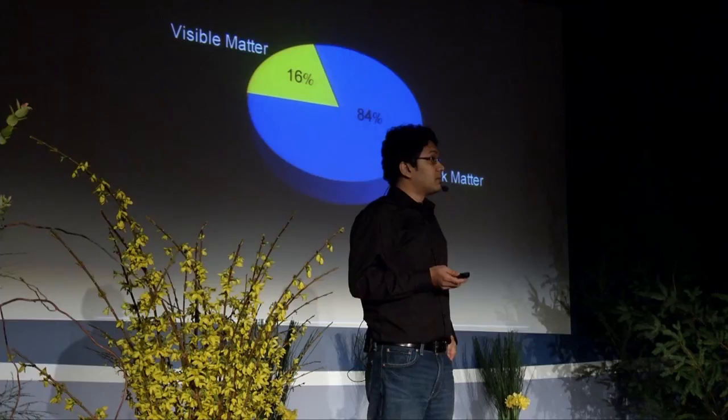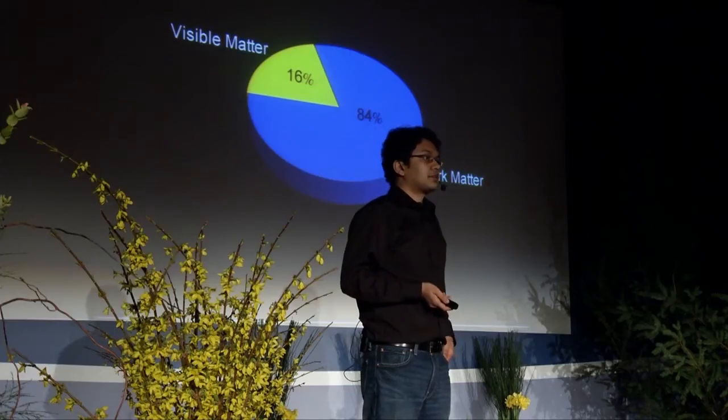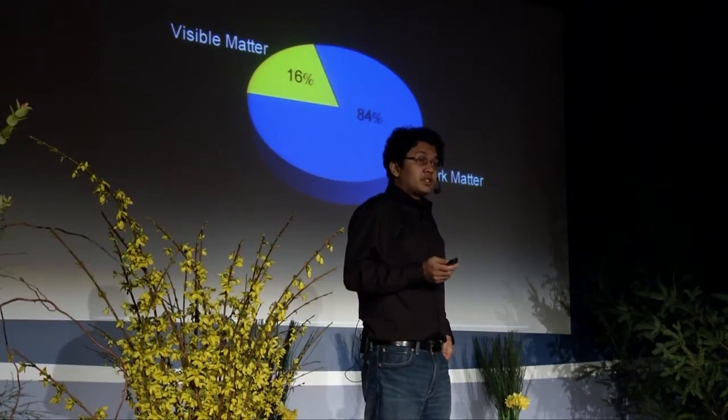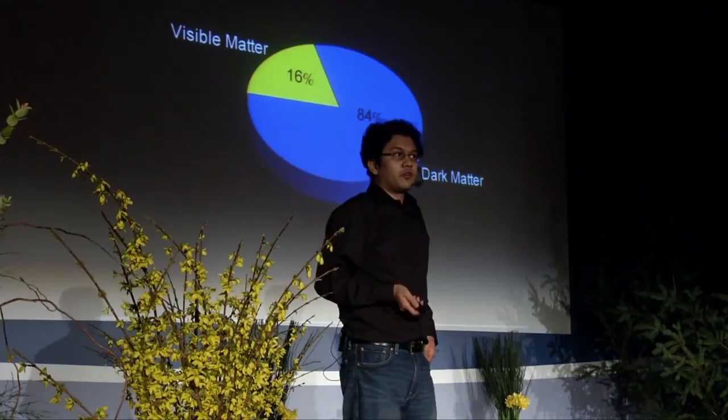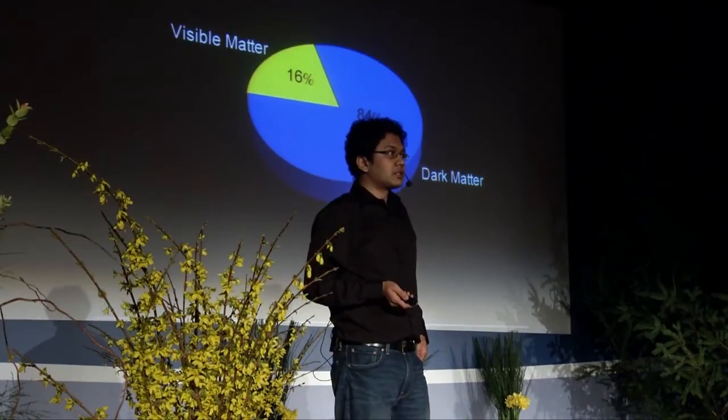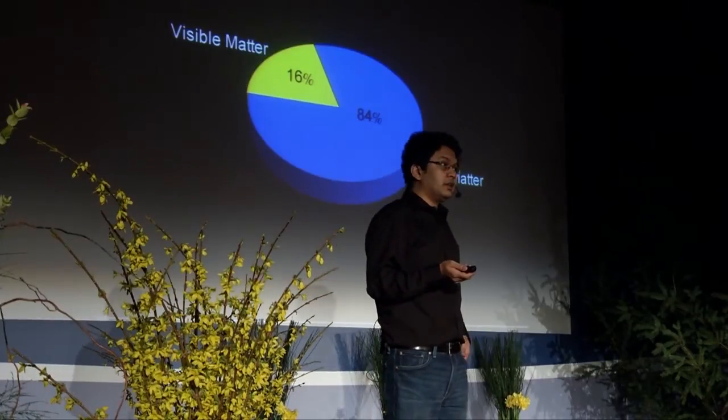Visible matter is very important — it makes up everything around us, all our gadgets and even ourselves. But in a way, dark matter is even more important than that. If it wasn't for dark matter, structure would not have formed in the universe. Galaxies would not have formed the way they did, and that would be a bit of a problem for us because we live in one such galaxy. So dark matter is very important — it's also more important than visible matter.